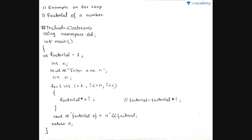Now let us check the example on for loop — here we have to find the factorial of a number. We have: #include iostream, using namespace std, int main. We initialize a factorial variable of int datatype to 1, accept number n from the user, then write: for(int i = 1; i <= n; i++). Here i is initialized to 1, i <= n is the test expression.